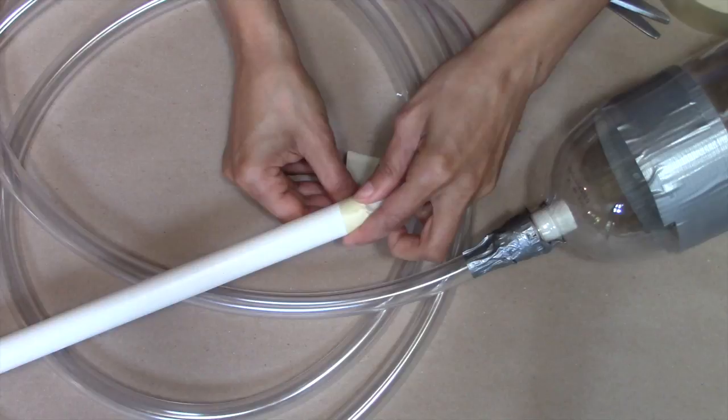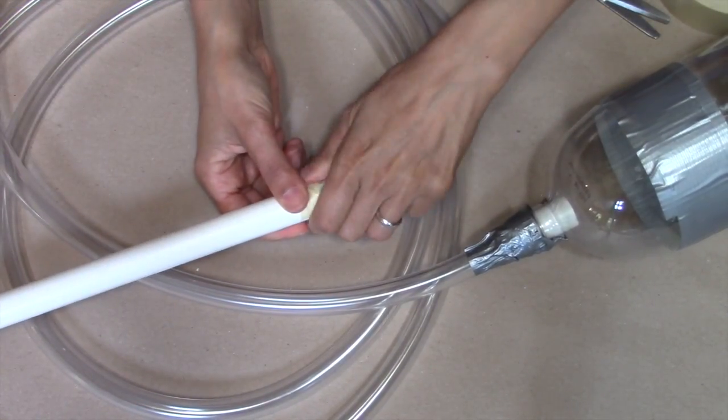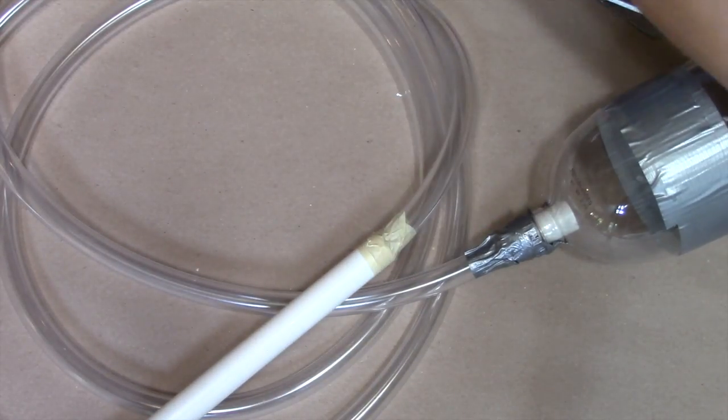The flexible PVC tubing is sold in 10 foot lengths at Home Depot for under $5. I used the whole length in this video, but you could use a piece that is anything from 3 feet to 4 feet or longer.